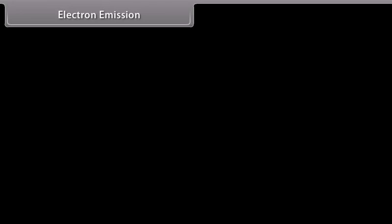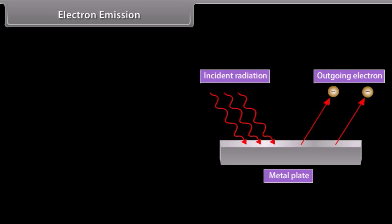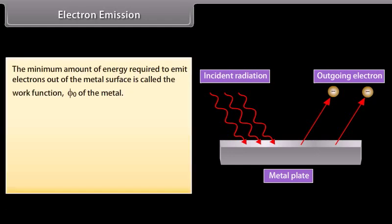In some solids called metals, the electrons, particularly the outer ones, are so loosely bound to their parent atom that they can easily move from one atom to the other and move about in the solid. These electrons are called free electrons, as they are free to move inside the solid but cannot leave the solid on their own. These electrons are held inside the metal surface by the attraction of the ions and surface forces. Thus these electrons require a certain amount of energy in order to come out of the metal surface.